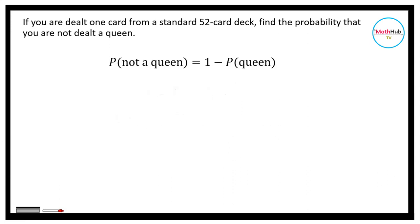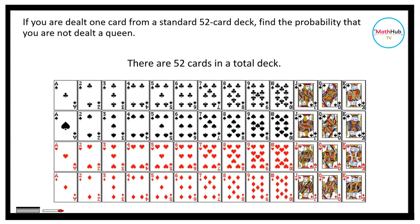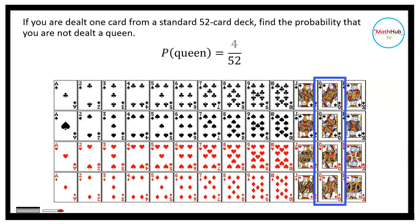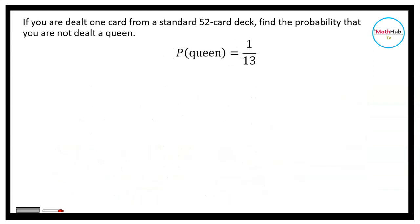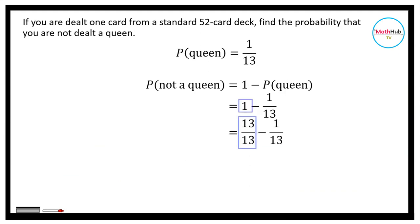To answer this, we will first compute the probability of being dealt a queen. You have 52 cards in total — that is the total possible outcomes. Out of 52 cards, you have 4 queens. Therefore, the probability of being dealt a queen is equal to 4 over 52, which is also equal to 1 over 13. Subtracting 1 over 13 from 1, you get the probability of not being dealt a queen. That is 13 over 13 minus 1 over 13, which equals 12 over 13.